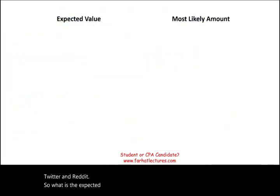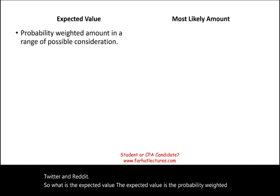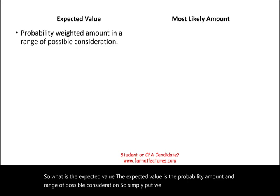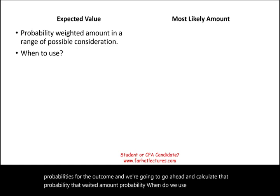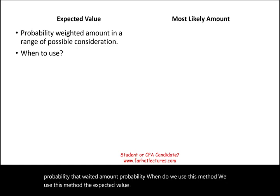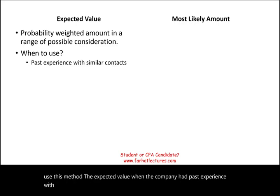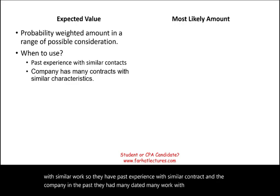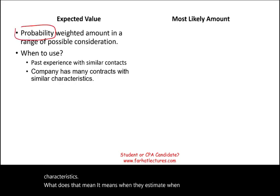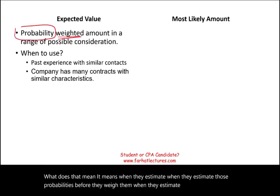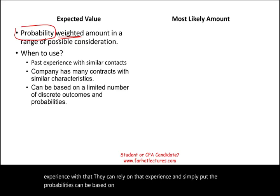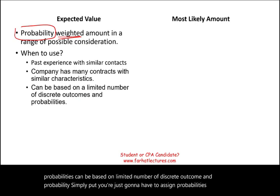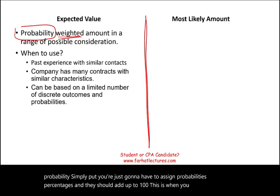The expected value is the probability-weighted amount across the range of possible considerations. We estimate different probabilities for each outcome and calculate the weighted probability amount. We use this method when the company has past experience with similar work — they've done many contracts with similar characteristics, so they can rely on that experience. The probabilities are assigned to a limited number of discrete outcomes and should add up to 100%.